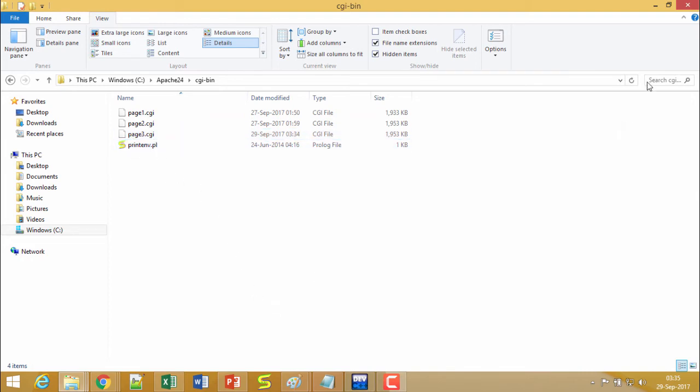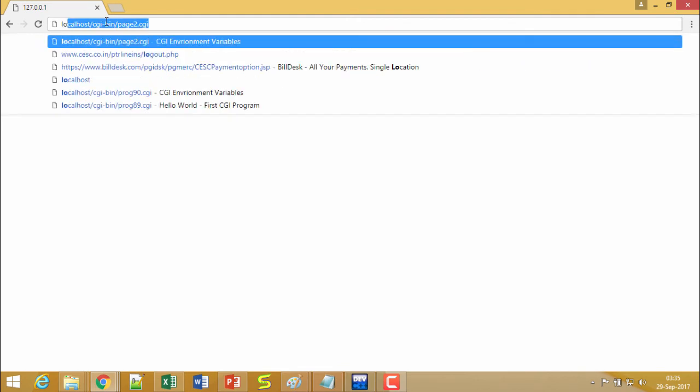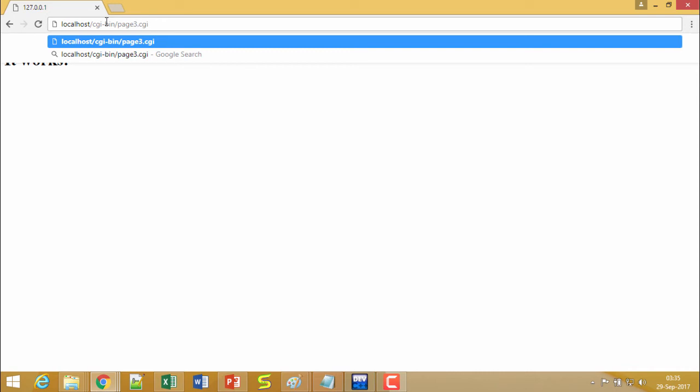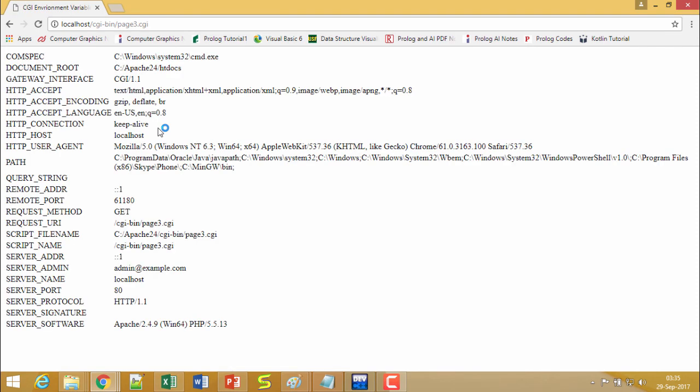Now I shall come to my browser. If I open and go for localhost/cgi-bin/page3.cgi and execute it, then all those 24 environment variable names and their respective values will get listed on the screen in the browser.